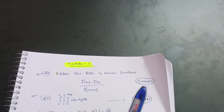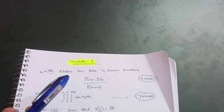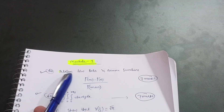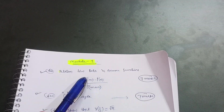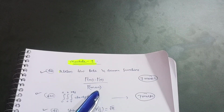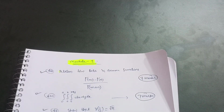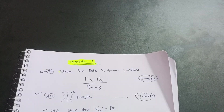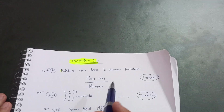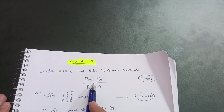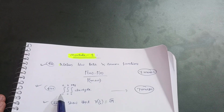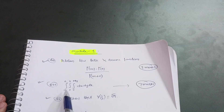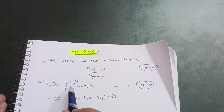In Module 1, there is one fixed question frequently asked in the VTU examination: the relation between beta and gamma functions — gamma(m) × gamma(n) = gamma(m+n). This is a derivation you should learn by heart from an exam perspective. It carries 7 marks. Next, there are integral questions: triple integrals and double integrals, such as the integral from 0 to a, 0 to x, 0 to (x+y) of dz dy dx — these also carry 7 marks.